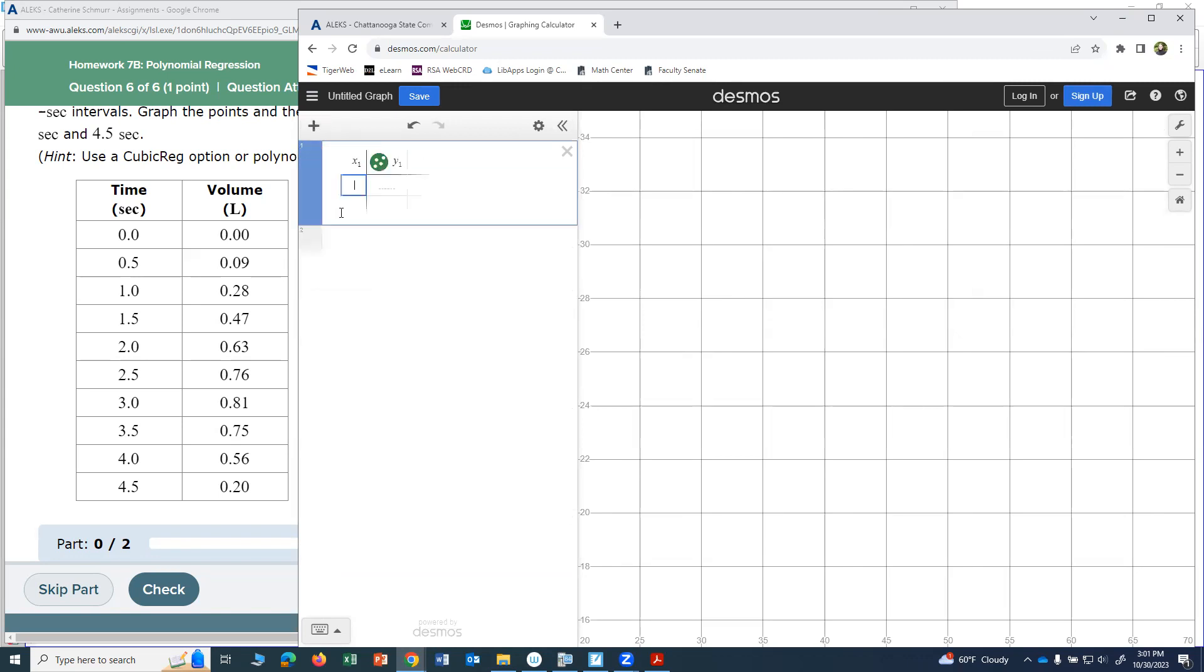Okay, so I'm going to go ahead and just hit the X to clear it out. To put the table in, I do the plus, select table. For my X values, I'm going to enter them just like I see in the table. Okay, I have all my X values entered. Now I want to do the Y values: 0.00, 0.09, 0.28, 0.47, 0.63, 0.76, 0.81, 0.75, 0.56, and 0.20.